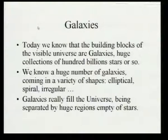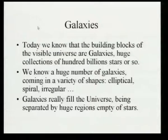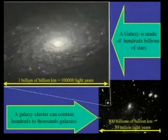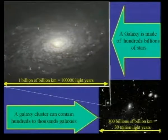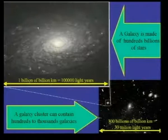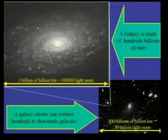Today we speak not of the universe made of stars, but of the universe made of galaxies, which are the building blocks of the universe. These are collections of 100 billion stars or so, and they come in a variety of shapes — elliptical, spiral, irregular — and really fill the universe as far as you can see. Galaxies are not the largest structures; they are organized in clusters of galaxies, which may be organized in superclusters, so there is a hierarchy of structures in the universe.